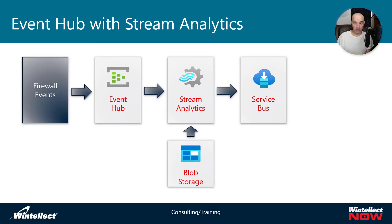The output from stream analytics can be some kind of other messaging platform — another event hub, service bus — or it can be static data. You could write it to blob storage or a SQL database. But the purpose of using stream analytics with the output is to do this in real time. You can write to cold storage like a SQL database, where an API might be querying against it, and that would be an acceptable use case for a streaming type workload.